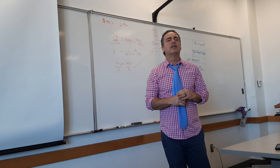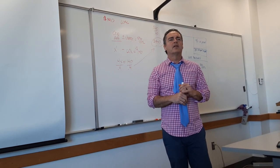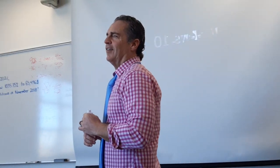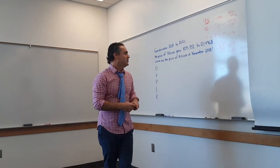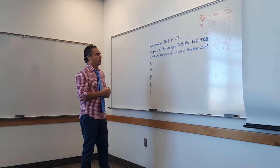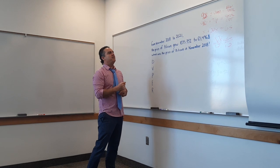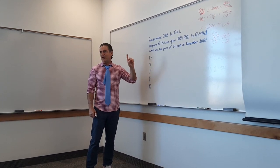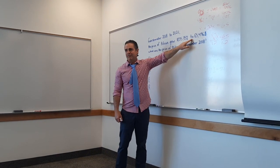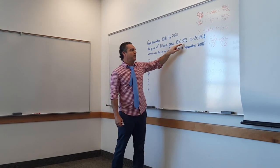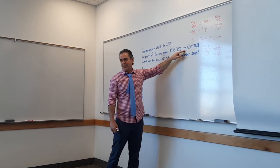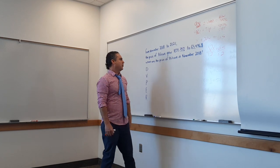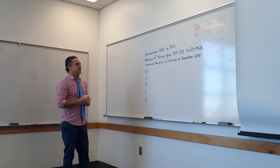Let's do this problem: from November 2018 to 2021, the price of Bitcoin grew 1,035.35% to $65,496. You had a problem just like this in the standard section, but this one's a work backward one. It's fascinating because the only word that changed was 'to.' If I say 'grew 1,035.35%' and told you the growth was $57,000, now it's a standard problem. This is work backward — why? Because we know what we grew to, but we want to know what the price of Bitcoin was back in the beginning.